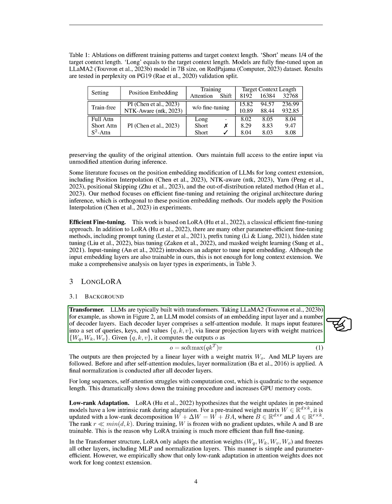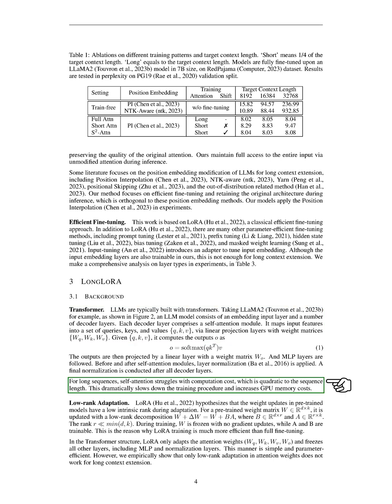LLMs are typically built with transformers. For example, an LLM like LLaMA-2 consists of an embedding input layer and several decoder layers. Each decoder layer includes a self-attention module that maps input features into a set of queries, keys, and values, which are then used to compute the outputs projected by a linear layer. However, for long sequences, the self-attention module struggles with computation cost proportional to the square of the sequence length.